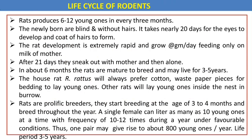Rats mature to breed in about 6 months and may live 3 to 5 years. They start breeding at 3 to 4 months and breed throughout the year. A single female can litter up to 10 young ones at a time, up to 10 to 12 times a year, so one pair may yield about 800 young ones per year.